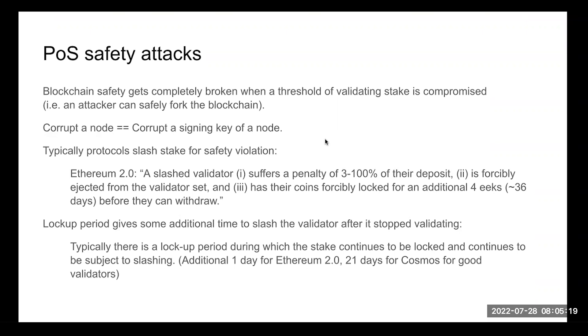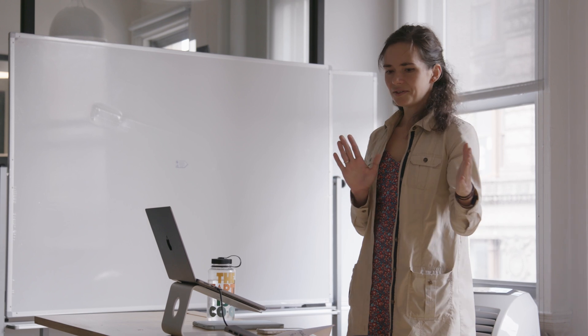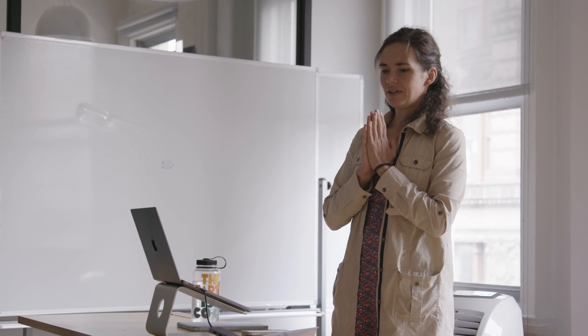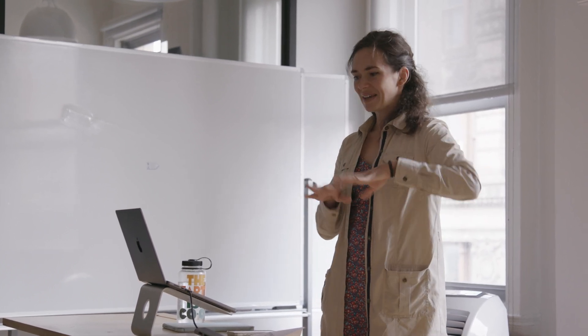During the time a validator is active and participating in producing blocks for consensus, it has some stake locked. In case of a deviation from the protocol, if it is observable, you can typically slash the validator's stake — penalizing it for misbehaving and causing the blockchain to fork. For Ethereum 2.0, slashing conditions can be very harsh: a slashed validator can lose potentially their entire deposit, from 3 to 100%, and will be forcibly ejected from the validator set.